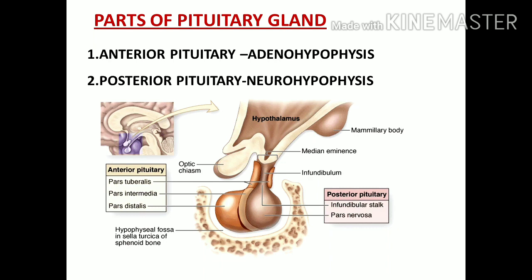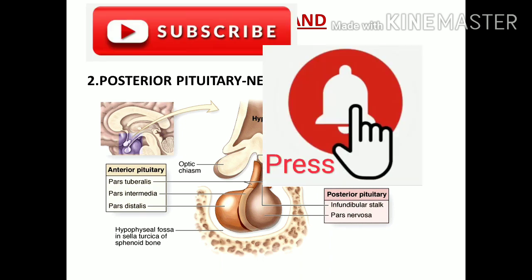What are the parts of the pituitary gland? The pituitary gland consists of two main parts: the anterior pituitary gland and the posterior pituitary gland. The anterior pituitary is also called the adenohypophysis, and the posterior pituitary gland is also called the neurohypophysis. Let us explain each part in detail.